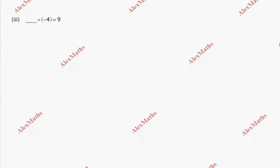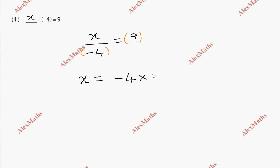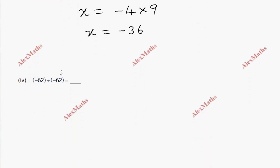Sub-division 3: blank divided by minus 4 equals 9. So x divided by minus 4 equals 9, and x equals minus 4 into 9, which gives x equals minus 36. Sub-division 4: minus 62 divided by minus 62 equals 1, because dividing the same number gives 1.